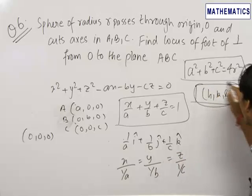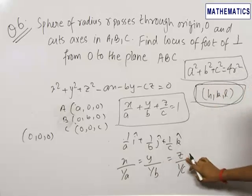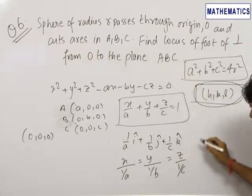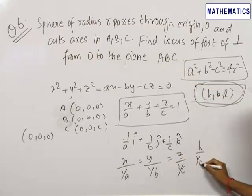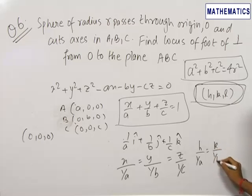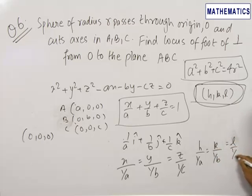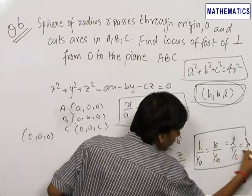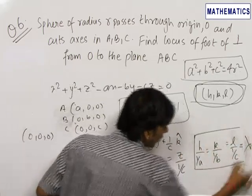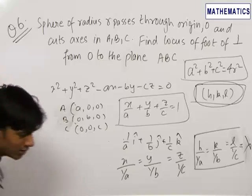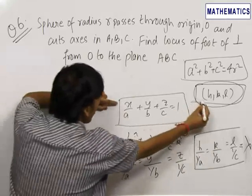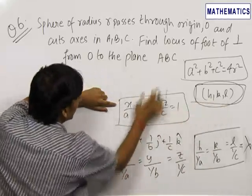The foot of perpendicular (H, K, L) lies on this line since it passes through the origin and is perpendicular to the plane ABC. Therefore we substitute to get H/(1/A) = K/(1/B) = L/(1/C). This is one relation we get. Whenever we have these ratios, it is advisable to set them equal to λ. The point (H, K, L) also lies on the plane ABC.